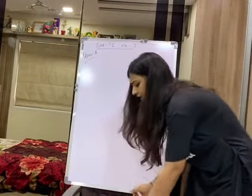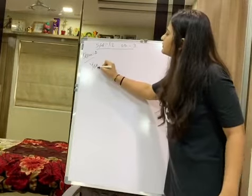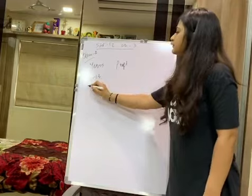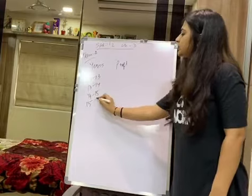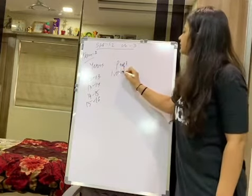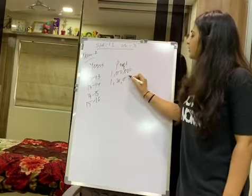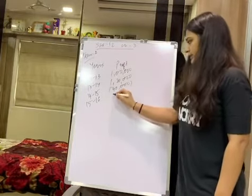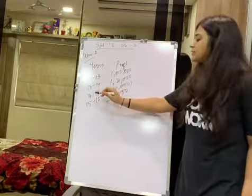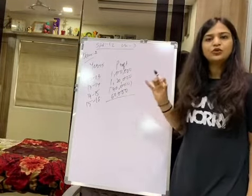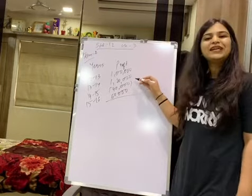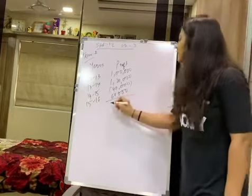The four years' data is as follows — years and profit: 2012-13: 1 lakh; 2013-14: 1 lakh 20,000; 2014-15: minus 40,000 (loss); 2015-16: 60,000. When there is a minus value, handle it directly: 1 lakh plus 1 lakh 20,000 equals 2 lakh 20,000; minus 40,000 equals 1 lakh 80,000; plus 60,000 equals 2 lakh 40,000 rupees total.